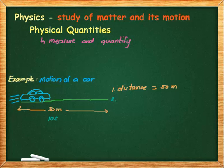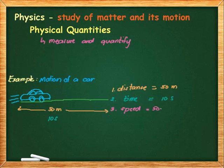Let's say this car was able to cover this distance in 10 seconds. So we have another physical quantity: time, which is equal to 10 seconds. Although it's not very obvious in the figure, you can also discuss the speed of the car. Speed is a measure of how fast or how slow the car is — that is distance over time, so 50 meters divided by 10 seconds, which simplifies to 5 meters per second.